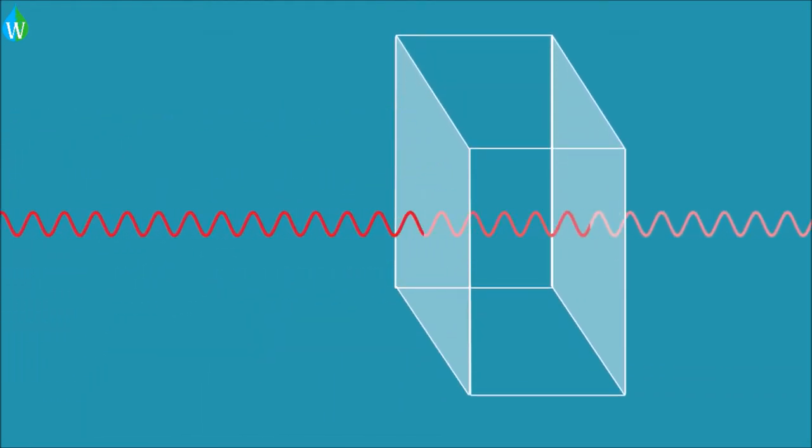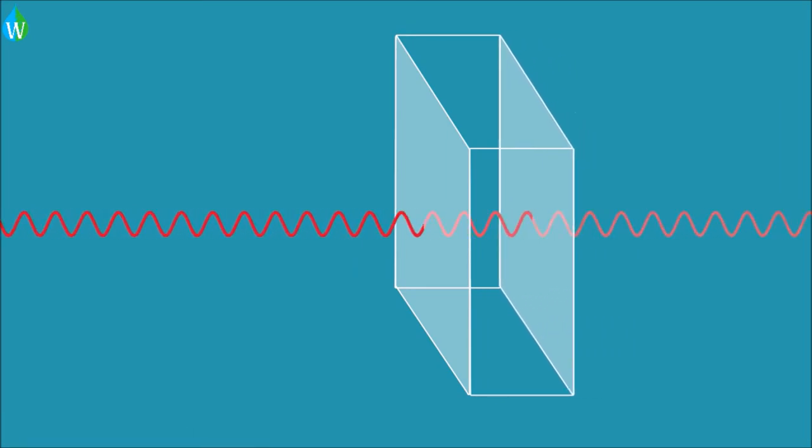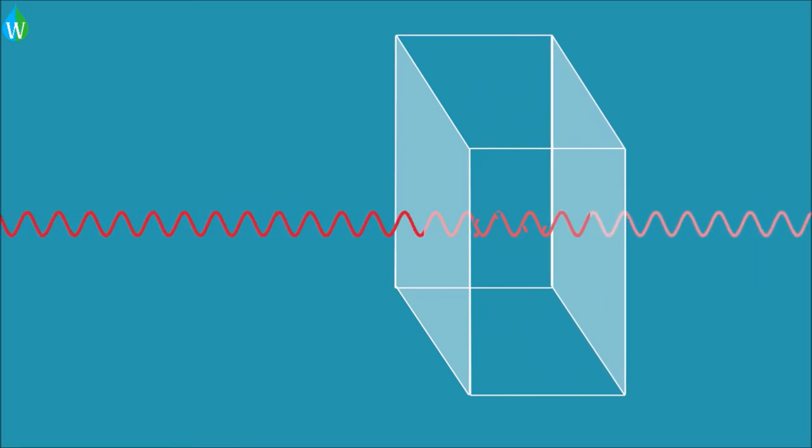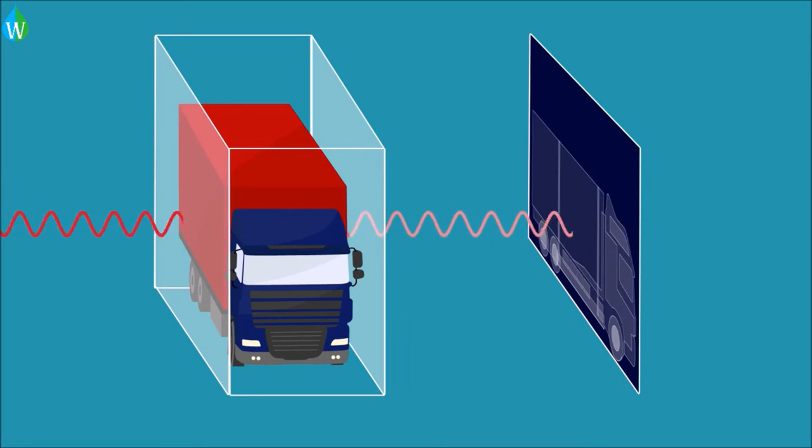Unlike visible light, X and gamma ray beams can be sent through most objects. While a part of them will be absorbed depending on the object's density and composition, the rays that pass through the object are then captured by a detector like a photographic film, creating a radiograph.